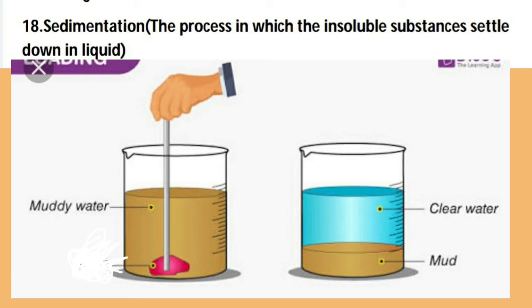The next hard word is 'sedimentation', spelled S-E-D-I-M-E-N-T-A-T-I-O-N. Sedimentation means the process in which insoluble impurities or substances settle down in a liquid. For example, take a transparent glass, add water, mix in one spoon of soil to make muddy water, then leave it for 15 minutes. After that, you will observe the insoluble substances settle at the bottom — this process is called sedimentation.